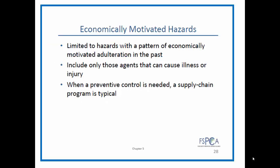Looking at the section on Economically Motivated Hazards, we'll go through point by point and discuss some of this in detail. There's not very much in the qualified individual training on this topic — there are two slides. First, limited hazards with a pattern of economically motivated adulteration in the past. A couple of key points: it's only health hazards, meaning public health hazards and illnesses. The pattern in the past is not defined — what is a pattern, how often, if only one occurrence counts as enough of a hazard to require a preventive control, or how far in the past. These are terms we'll hopefully see more clarity on over the coming months.